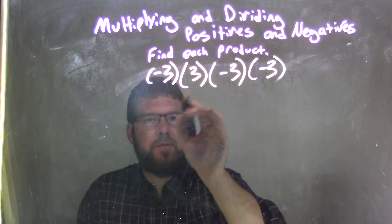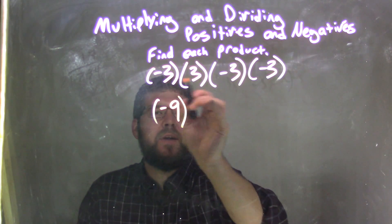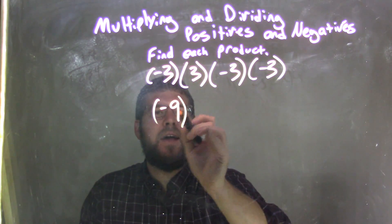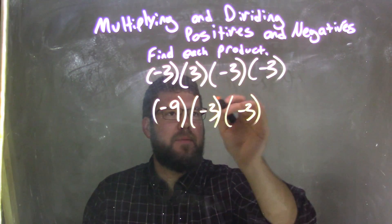Negative 3 times a positive 3 is negative 9. So 3 times 3 is 9, but a negative times a positive is negative. I'm going to bring down this negative 3 and then this negative 3.